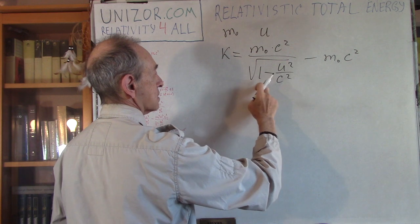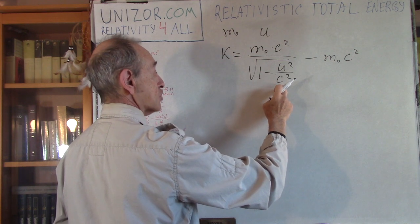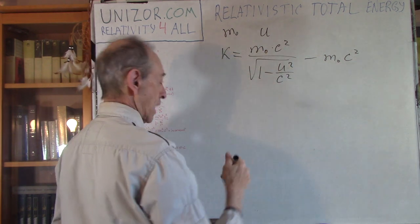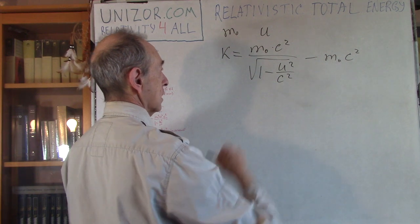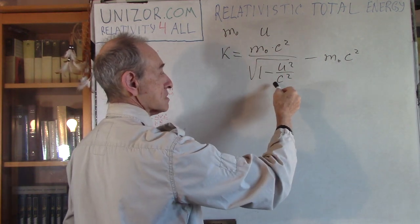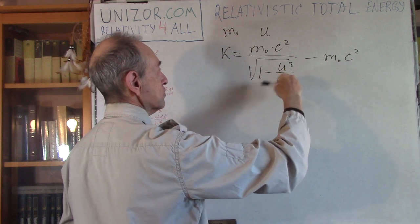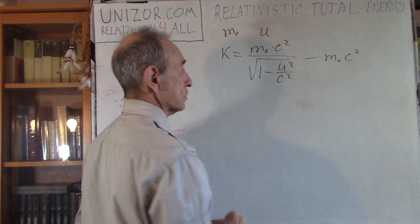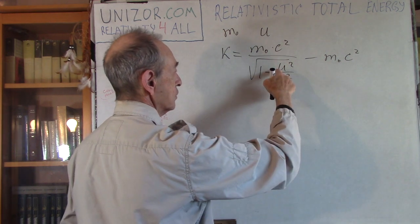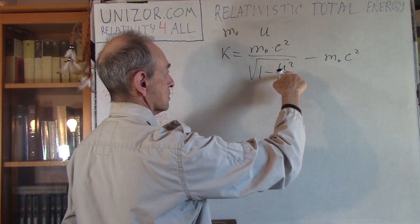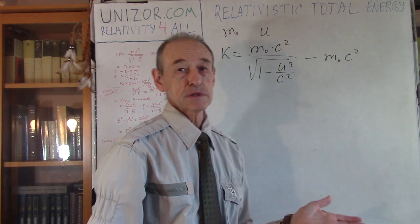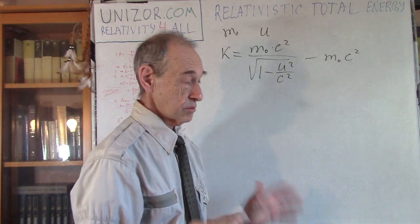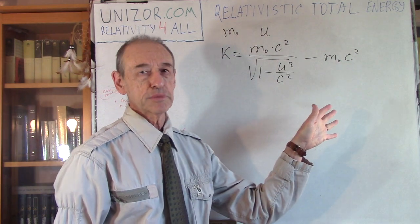Now u/c is less than one generally speaking because u is the speed of the object and c is the speed of light, which means the whole fraction is greater than m0 c squared — we divide by something less than one, so the result is increasing. That's why kinetic energy is positive, or at least non-negative. Only if u is zero do we get zero, which is obvious: if speed is zero, kinetic energy is zero.